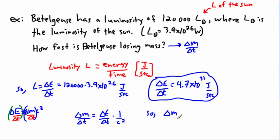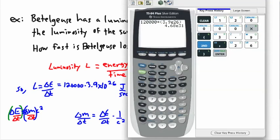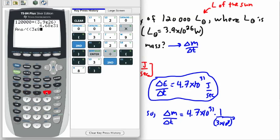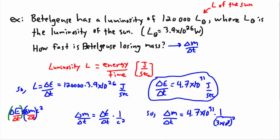So delta M over delta T — how fast the mass changes with time — equals 4.7 times 10 to the 31 joules per second, divided by (3 times 10 to the 8) squared. On the calculator, dividing the last answer by (3 times 10 to the 8) squared gives 5.2 times 10 to the 14. Therefore, the answer is 5.2 times 10 to the 14 kilograms per second.